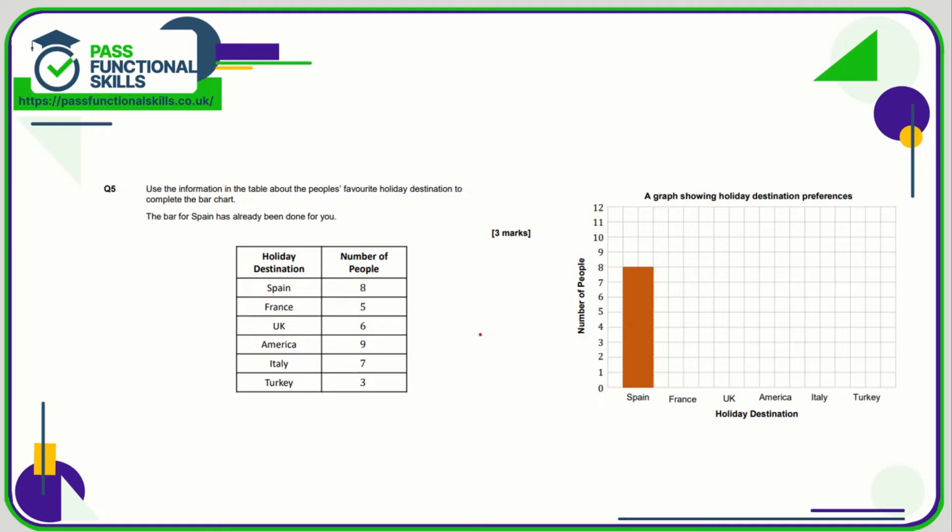Question number five, we just need to complete the bar chart. So we can see Spain goes up to 8. France needs to go up to 5. We're going to take our cue from Spain here. We can see that the bar is two wide, so we're going to leave a gap and this one is also going to be two wide and it's going to get all the way up to 5. UK goes up to 6. Again, leave a space between the UK and the France one. America is 9, so that's going to be up to here.